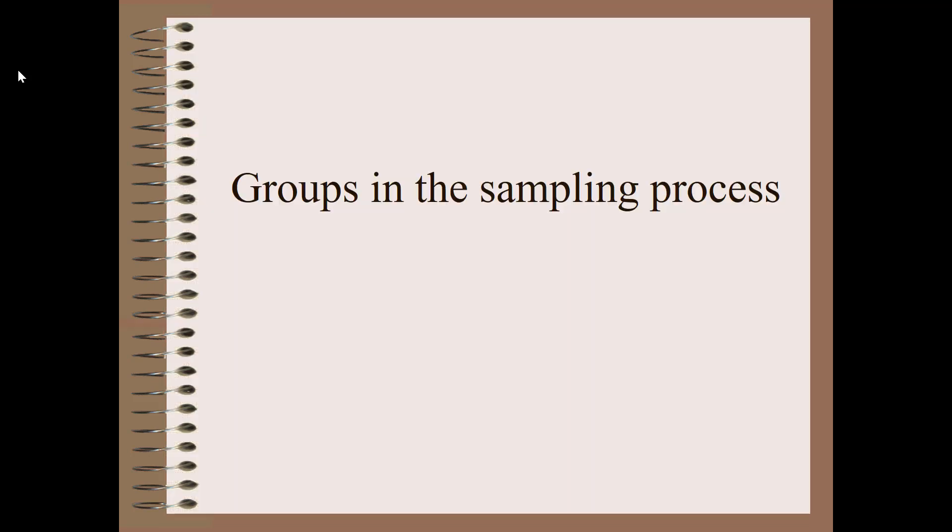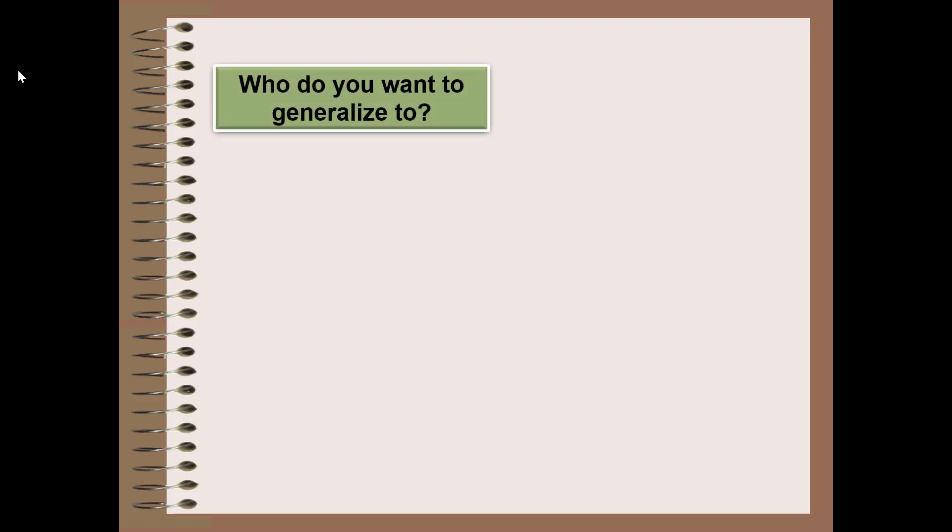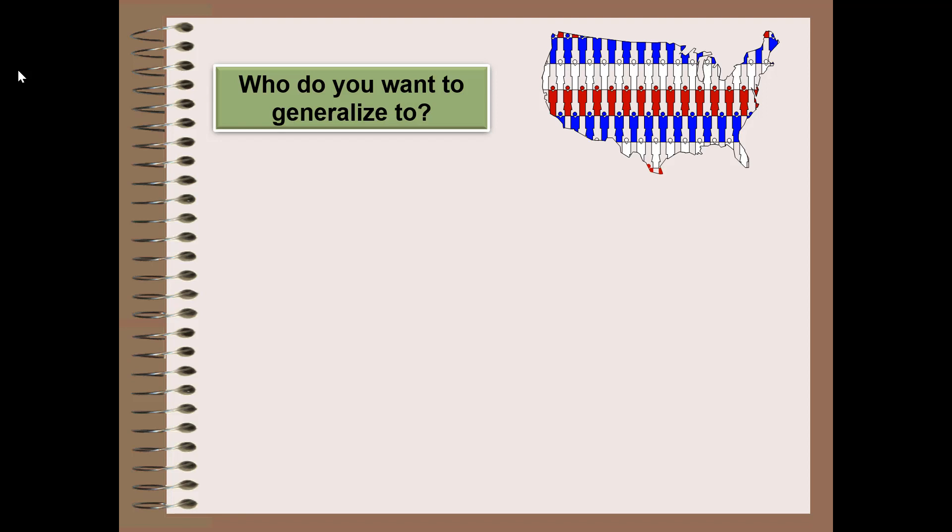One way to think about the sampling process is to consider the various groups that will be involved. There's a series of questions we can ask to get down to who is actually in the study. The first question is who do we want to generalize to? At the end of the day when we have our study's findings, who do we want to say these findings apply to? This is referred to as the theoretical population.